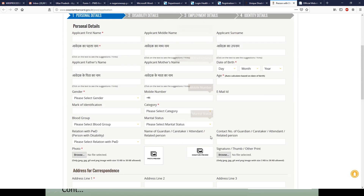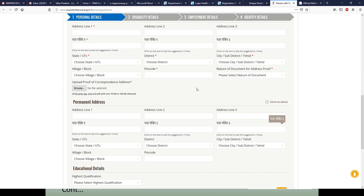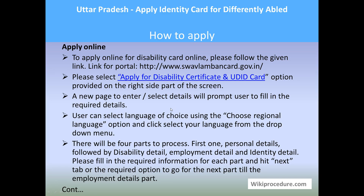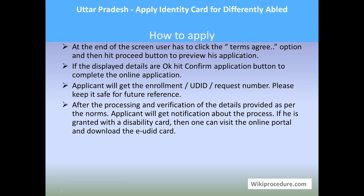Select your preferred language and hit Go — the application form will be presented in that language. Fill all the prompts and hit Next for each section to proceed. On the final page, click the 'Terms Agree' option and hit Proceed to preview your application. Review for any errors or missed fields. If everything is correct, hit the 'Confirm Application' button to submit the application online. Upon submission you will receive an enrollment or UDID request number — keep it for future reference.